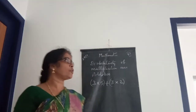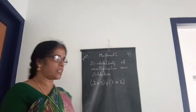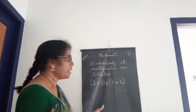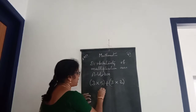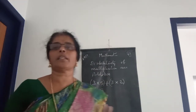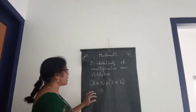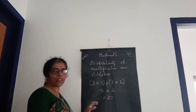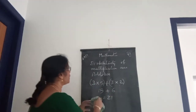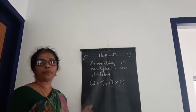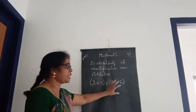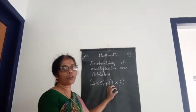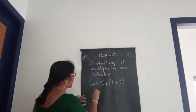Look here — distributivity of multiplication over addition. You get the question: 3 into 5 plus 3 into 2. We can easily do that since these are small numbers. Three fives are fifteen, plus three twos are six, giving 15 plus 6 equals 21. Now look at how to do it using distributivity. Here in the first bracket that is 3, and in the second bracket also 3 is common, so we can take out that 3.